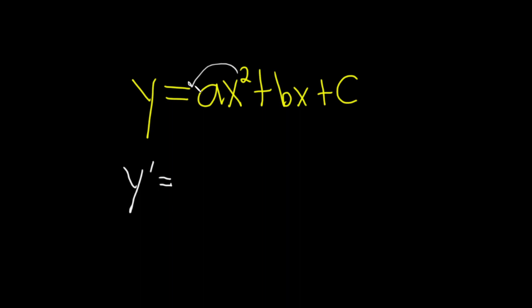We bring down the 2, so we get 2ax, and then we subtract 1 from the exponent. So 2 minus 1 is 1. That's the power rule.